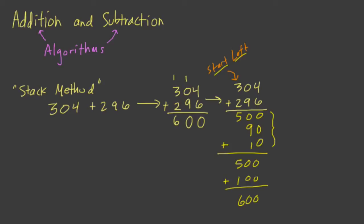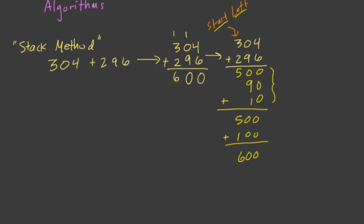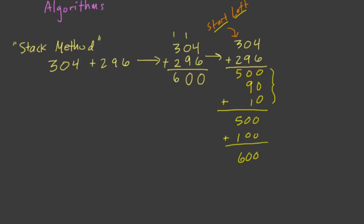Stacking with subtraction works in much the same way. Typically again, when we subtract with the stacking method, what I was taught is to start at the smallest place value first. So if you look at 304 minus 296, the stacking method, we would stack those numbers up: 304, 296.